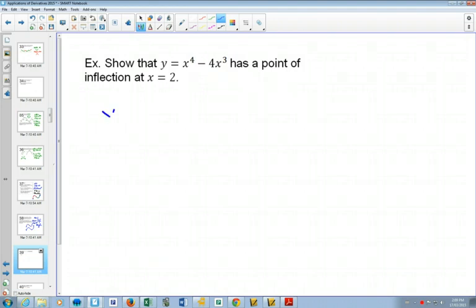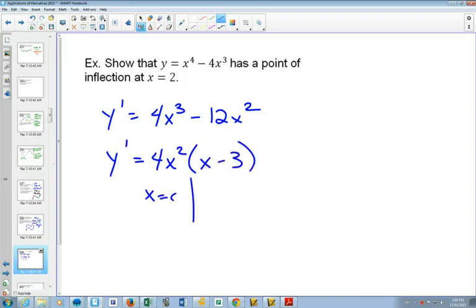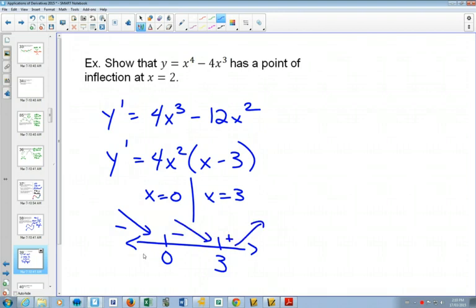So we start with our first derivative here. We can factor out 4x squared, so we get x equals 0 and x equals 3. And plug in numbers here. Is this the same one we had before? Same equation. So we already did this, and we've seen that these are our results from our first derivative.